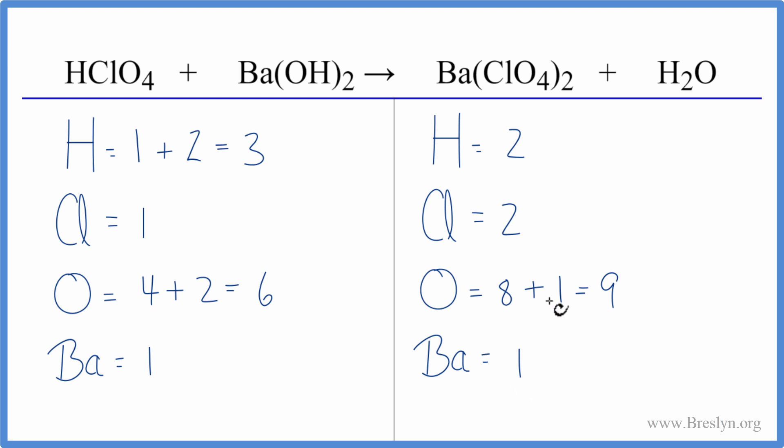It's usually helpful to leave the oxygens and hydrogens till last, so let's focus on the chlorine first. We have two here and one here. Put a coefficient of two in front of the HClO4. Let's update these numbers here. For hydrogen we have one times two plus the two times the one there, two. So we have four hydrogens.